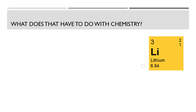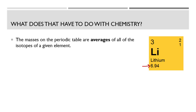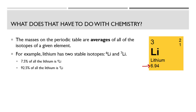What does all of this have to do with chemistry? The atomic mass number you see on the periodic table is actually a weighted average of all the different isotopes of that element. Isotopes exist in different abundances, and the atomic mass takes into account the quantities of each isotope. For example, lithium has two stable isotopes: lithium-6 (three protons, three neutrons) and lithium-7 (three protons, four neutrons). 7.5% of all lithium is lithium-6 and 92.5% is lithium-7.